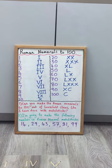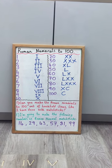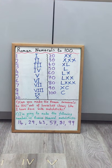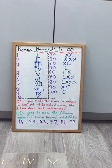Now as you can see on my board I've written out the Roman numerals for the numbers 1 to 10 and then for 20, 30, 40, 50, 60, 70, 80, 90 and 100.